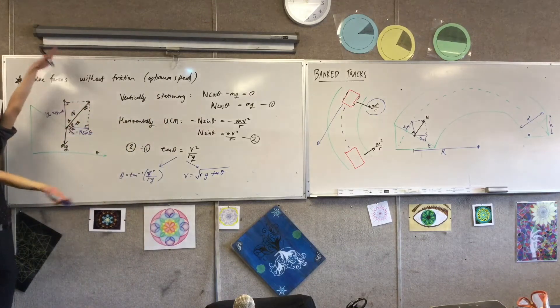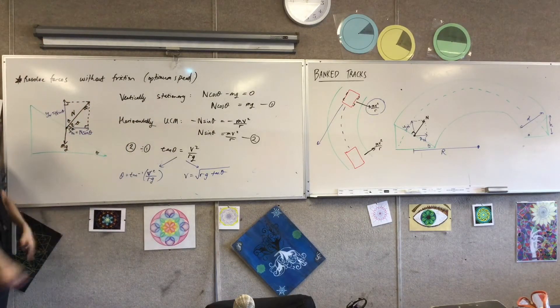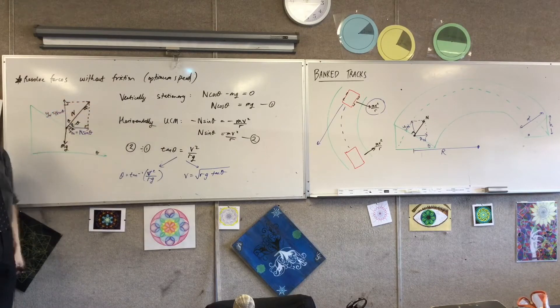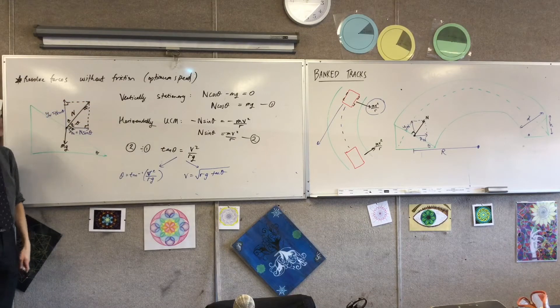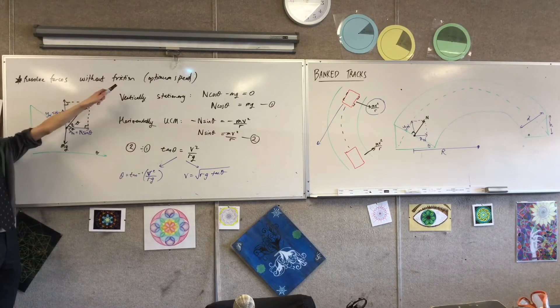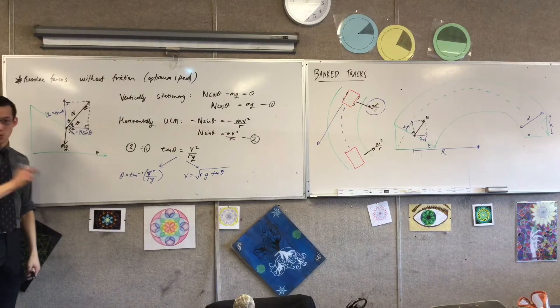This is under all ideal circumstances. Exactly the right row, exactly the right speed, and so on. But this isn't always the case. Okay, so this is case one, without friction. Now we're going to work it out with friction.